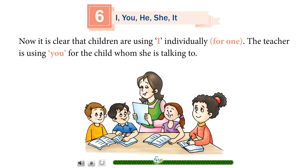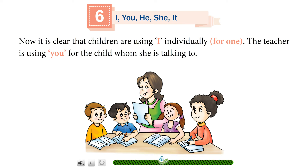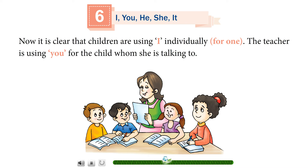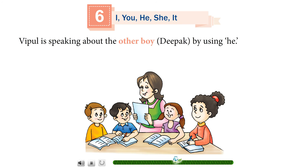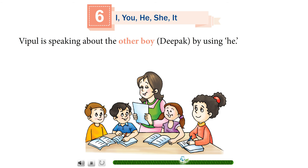Now it is clear that children are using 'I' individually for one person. The teacher is using 'you' for the child whom she is talking to. Vipul is speaking about the other boy, Deepak, by using 'he'.